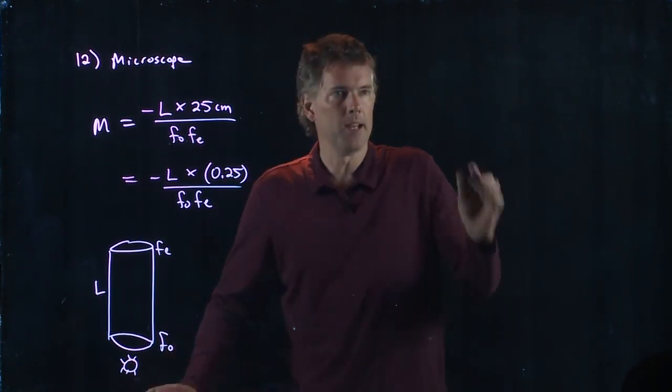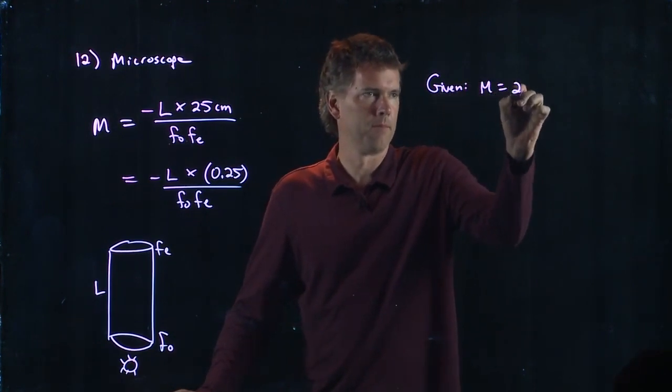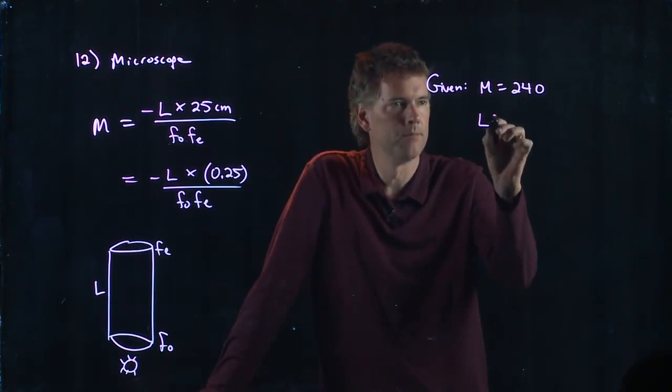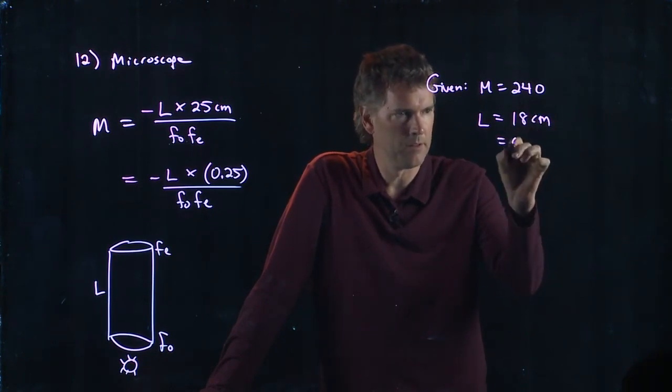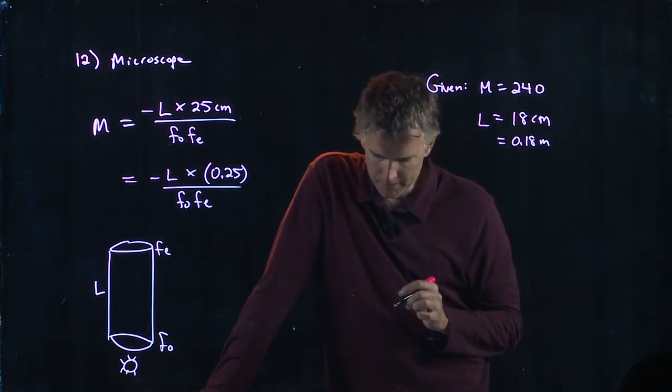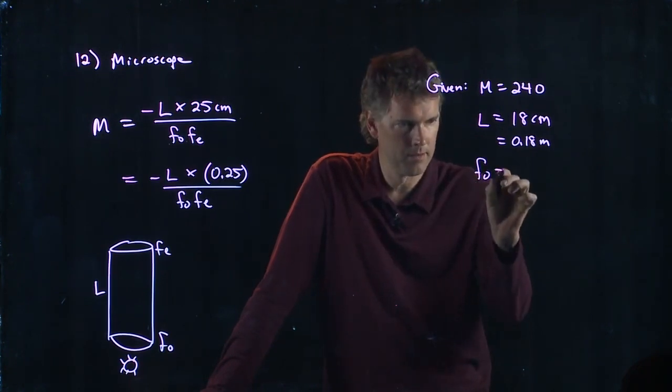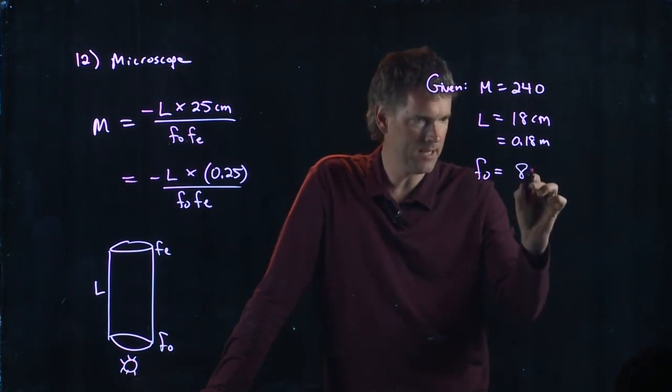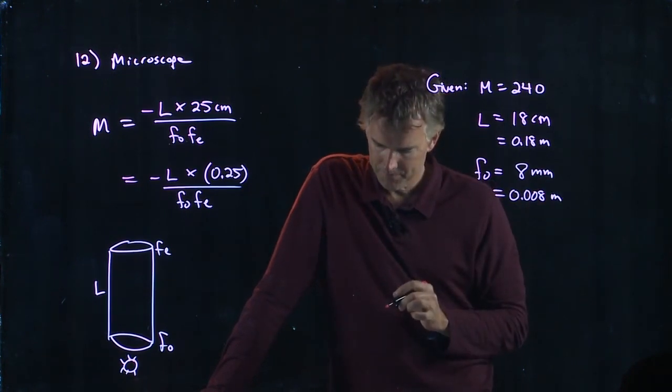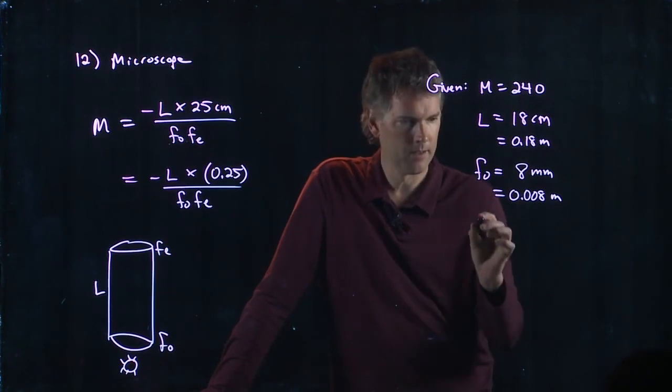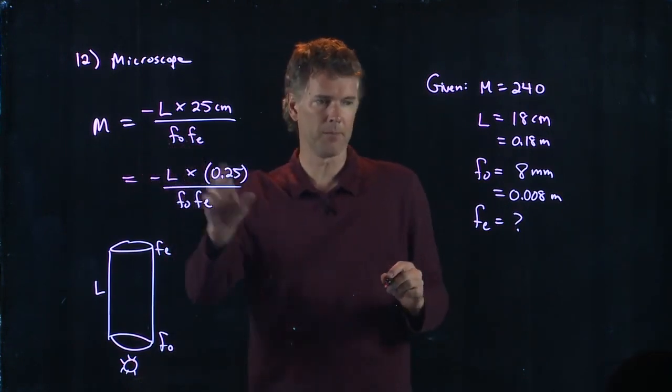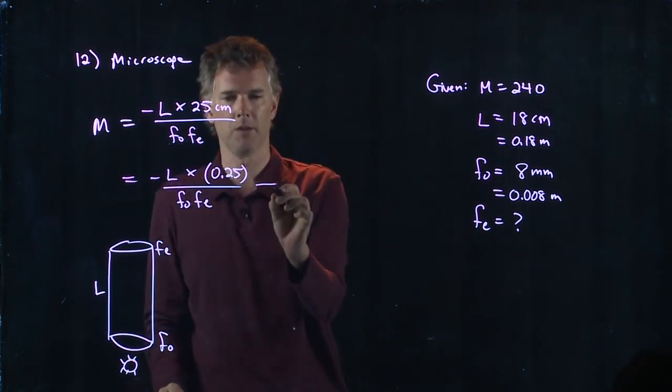So how do we do this? Well, they tell us M, right? M is 240. They tell us L, 18 centimeters. So that's 0.18 meters. And they also tell us the focal length of the objective. Focal length of the objective is 8 millimeters, which is 0.008 meters. And we need to calculate the eyepiece. It's not too bad because we know everything in this equation except the eyepiece. So let's just solve this equation for the eyepiece.